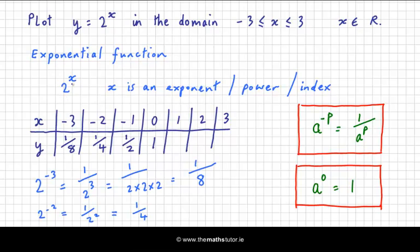Now 2 to the power of 1 is just 2, 2 squared is simply 4, and 2 cubed is 8. So I now have my inputs, which is in the x values, my domain, and my outputs, which is the range, goes from 1 eighth up to 8.